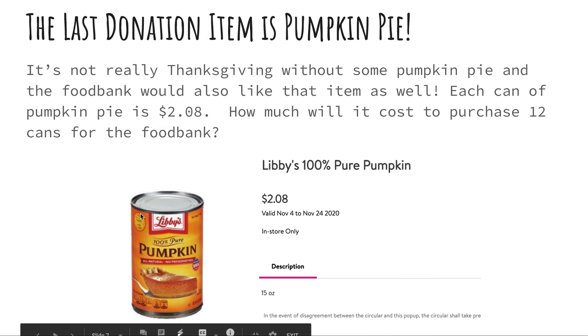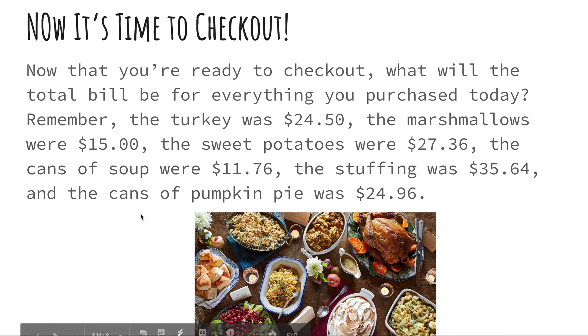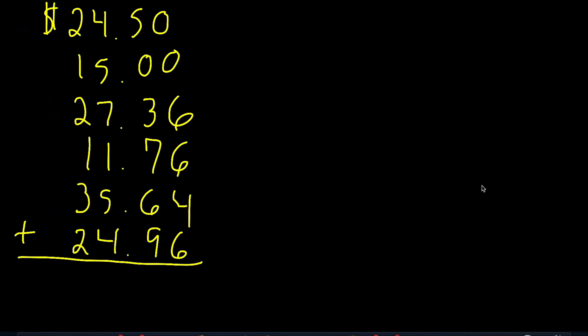Now, we've got one last thing now. And that, well, it's the checkout. We have to make sure that we actually check out of the grocery store, right? So we're going to have to go ahead and add up our total. So if you remember, the turkey was $24.50. The marshmallows were $15 even. The sweet potatoes were $27.36. The cans of soup were $11.76. The stuffing was $35.64. And the cans of pumpkin pie were $24.96. Now, this is an addition problem now. The one thing, though, that I want you to focus on, there are multiple strategies that you could use here. So obviously, you could just do this where you line up all the decimals. Everyone at home say, line them up. Yep, that's right. I'm expecting you to say it. Good, good, good. So you'd line up the decimals. Now, once you actually line up those decimals, you would go ahead and add.